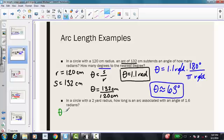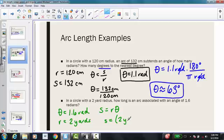So this time we're given theta equals 1.6 radians, and our radius is 2 yards. So this time I'm going to use the formula I had on the previous page, where our arc length equals our radius times our angle theta. So s equals 2 yards times 1.6 radians, which gives me an arc length of 3.2 yards.